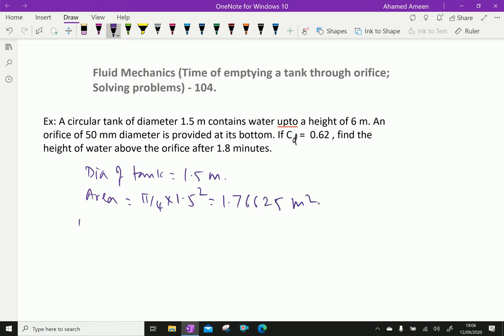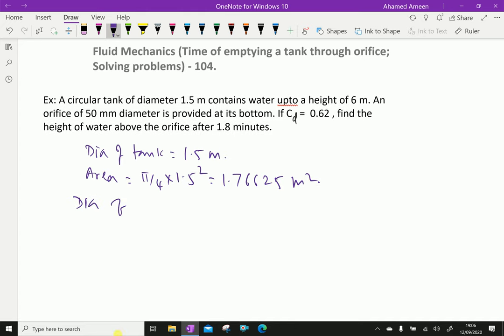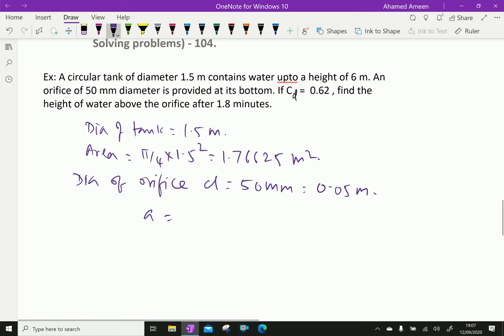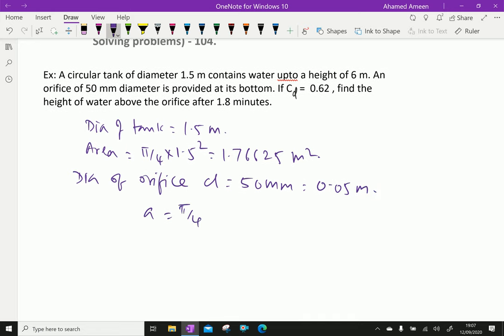Now, diameter of orifice D equals 50 mm, which is 0.05 meter. Then, area of the orifice equals pi by 4 times D square equals pi by 4 times 0.05 square, which gives 0.001963.